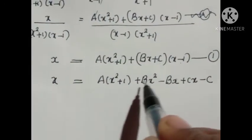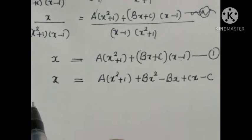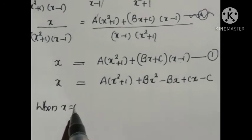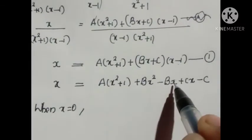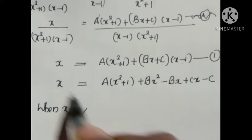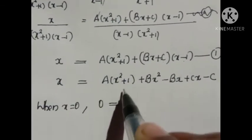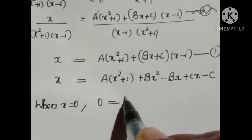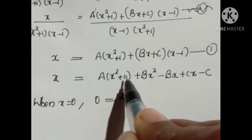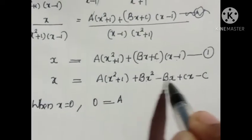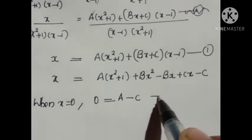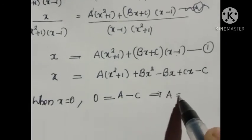When we put x = 0, the Bx and Cx terms become zero. Left side is 0. This gives 0 = A(0 + 1) + (0 − C), that is 0 = A − C, which implies A = C.